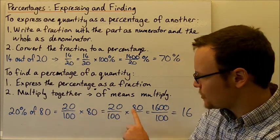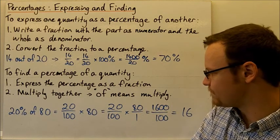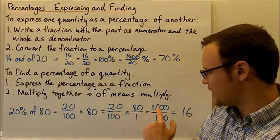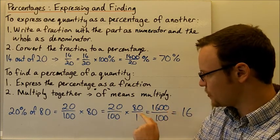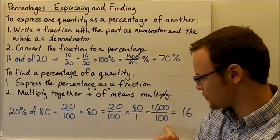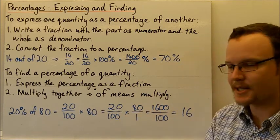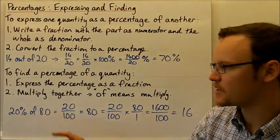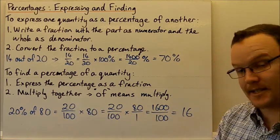'Of' is multiplied by 80, so that's 20 over 100 multiplied by 80 over 1. And 20 times 80 is going to be 1,600, and 100 times 1 is just 100, and that's equivalent to 16. So that means that 20% of 80 is 16.